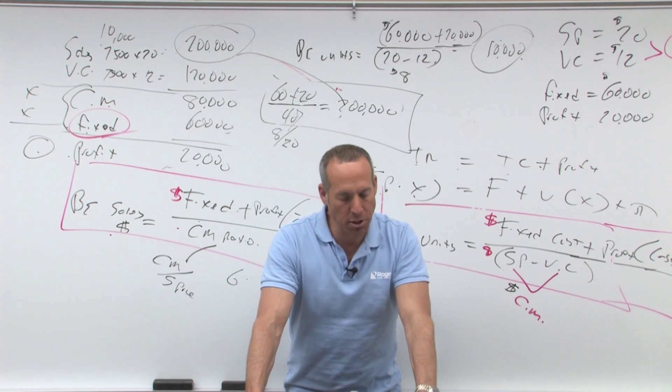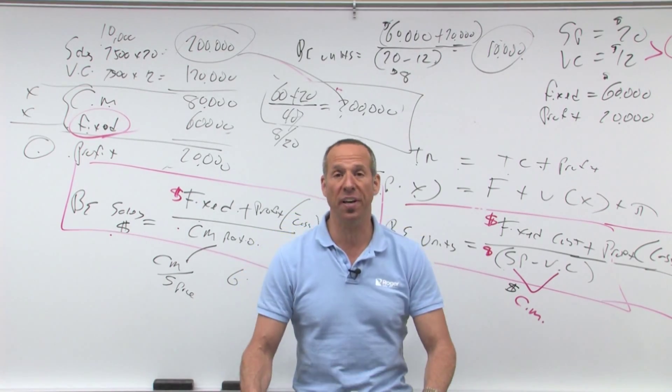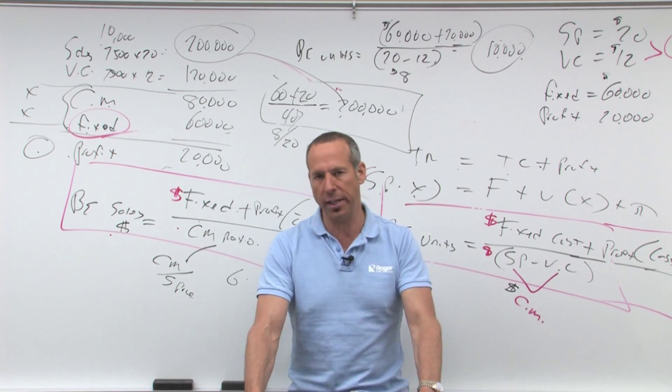Unit variable costs are unchanged, true. Remember we have within the relevant range fixed or fixed in total, variable or fixed per unit. Total costs are unchanged, no. Total fixed costs are non-linear, no, they're linear.